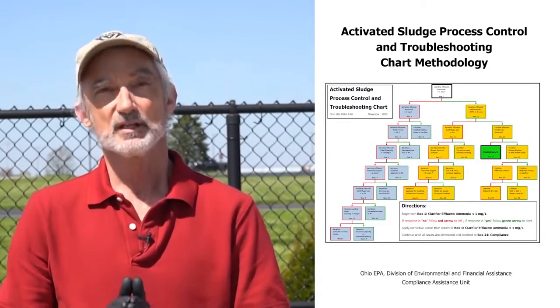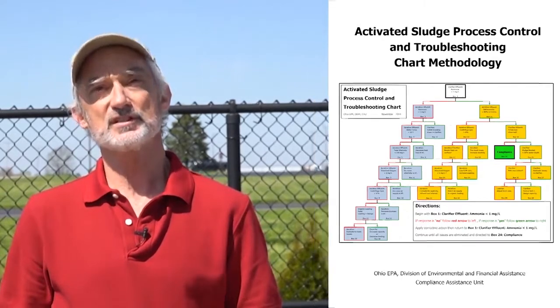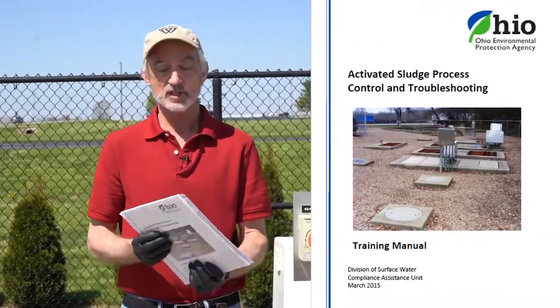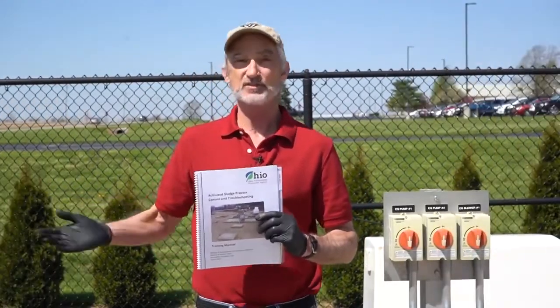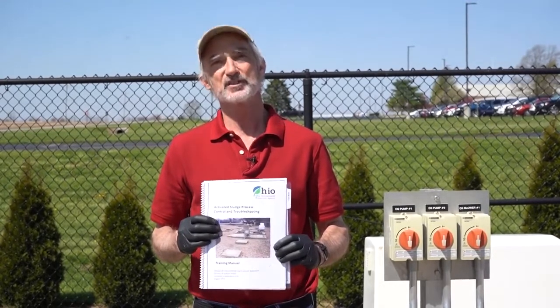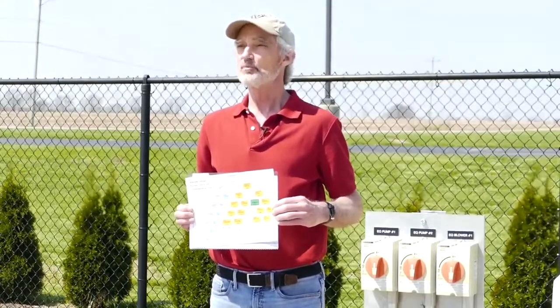What we're going to do today is go through a process control and troubleshooting chart and manual, and we will look at each treatment unit and see how well this treatment plant is actually running. We have cheap, easy, and effective process control tools that we use to diagnose non-compliance. We can usually figure out in about an hour what the problem is and then work with the operators to get them back into compliance using the same tools. The only difference between process control and troubleshooting is the urgency — if you're troubleshooting you're already in non-compliance, but you can use the same tools and the same flowchart to maintain compliance.